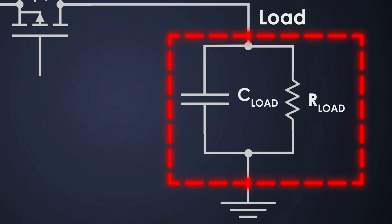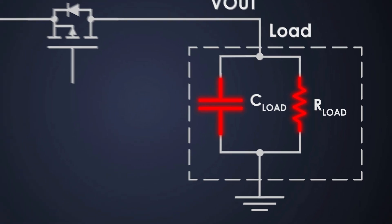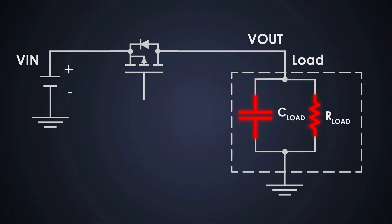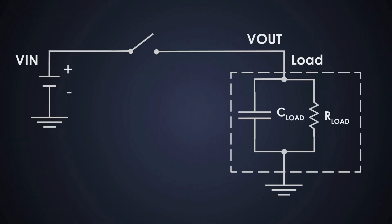On the right side of the circuit, we have actual load. It is shown as a resistor and a capacitor, which represents our downstream circuit. Now, here is where the magic happens.